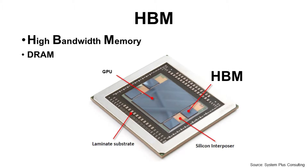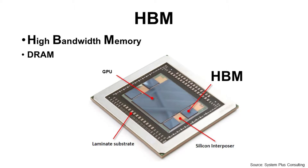HBM stands for High Bandwidth Memory. It is a kind of DRAM and looks like this. For more detailed structure, it has multiple vertically stacked DRAM dies with TSB on top and also has a logic die at the bottom which also has TSB.